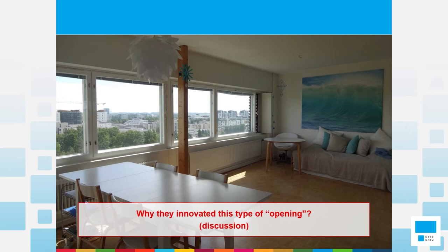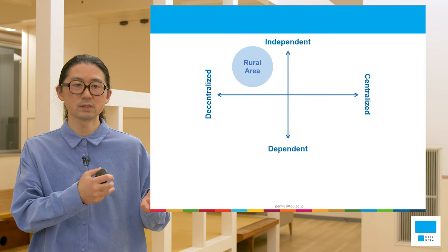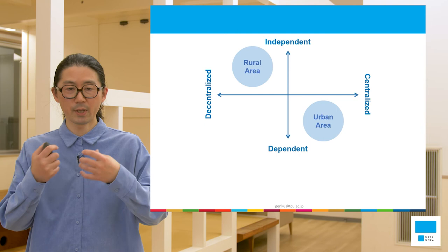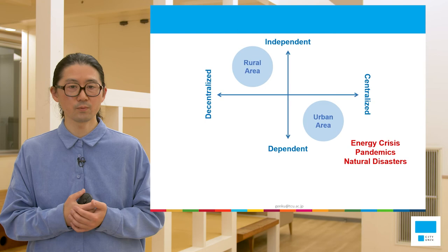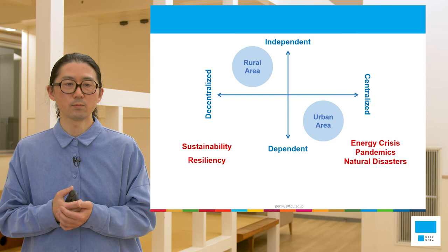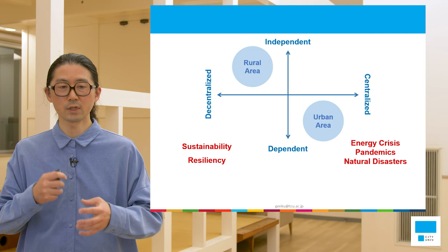Why I show this diagram is because in the past, rural areas lived independently and power systems and ways of living were decentralized. Little by little, urban areas became centralized and our lives depend on those systems. But nowadays, of course, we have a lot of difficulties like energy crises, pandemics, and natural disasters. Suddenly such infrastructure can be destroyed or stopped, and we need to think about how to manage our daily life without these infrastructures. We need to consider the sustainability of cities and our living spaces, and the resiliency of the built environment — how we can keep and manage under unexpected situations.